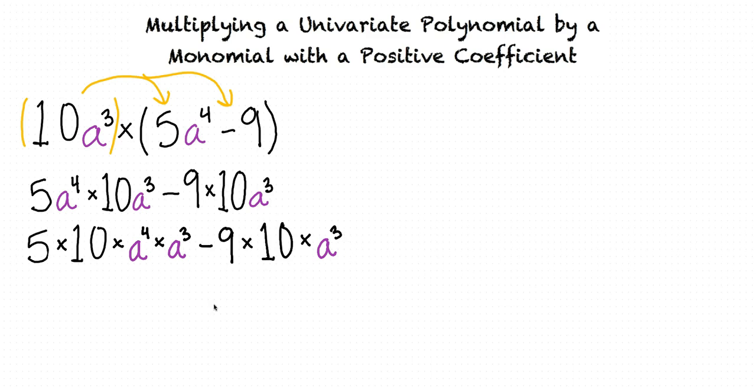so that our constants and our variables in each term are all grouped together. Then we can use multiplication and the product rule of positive exponents to simplify this as 50a to the seventh power minus 90a cubed.